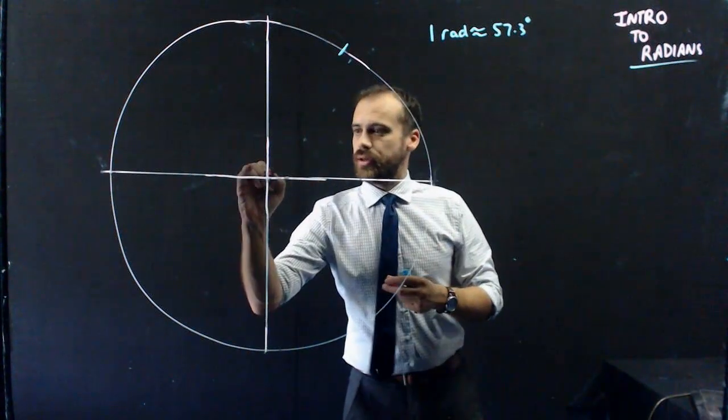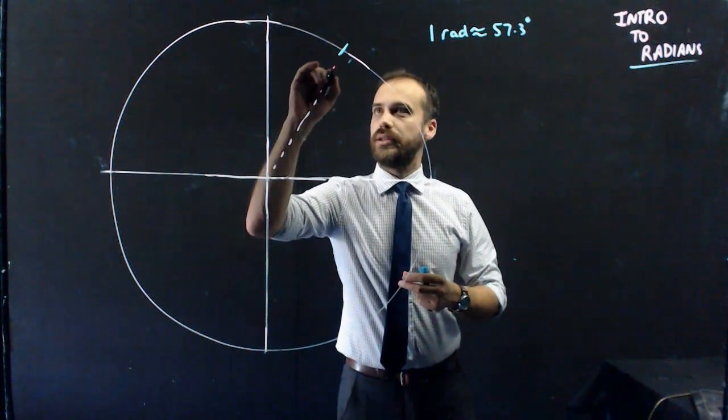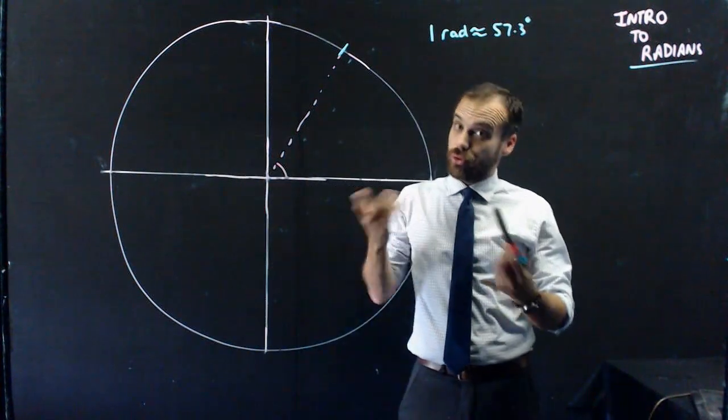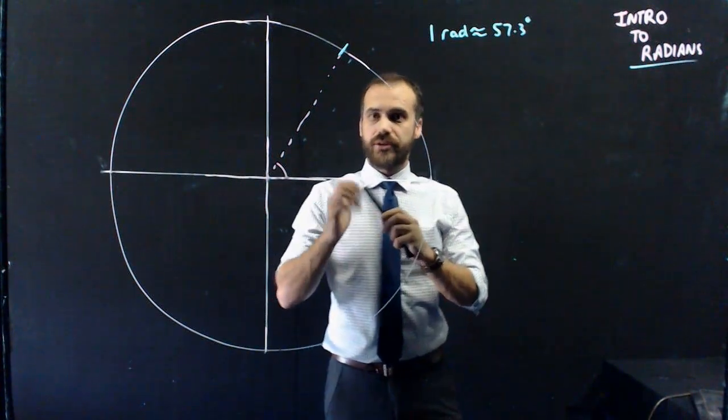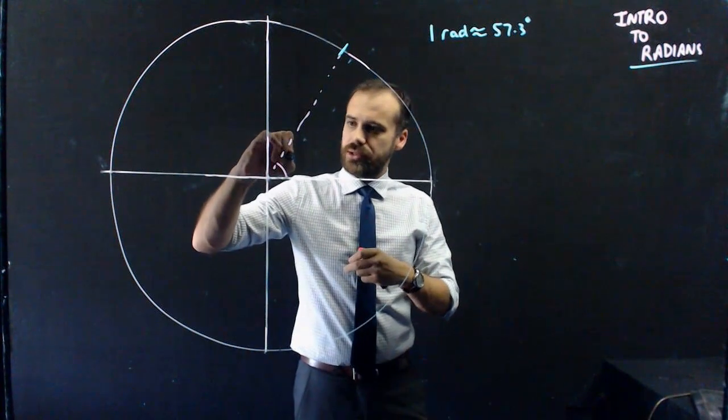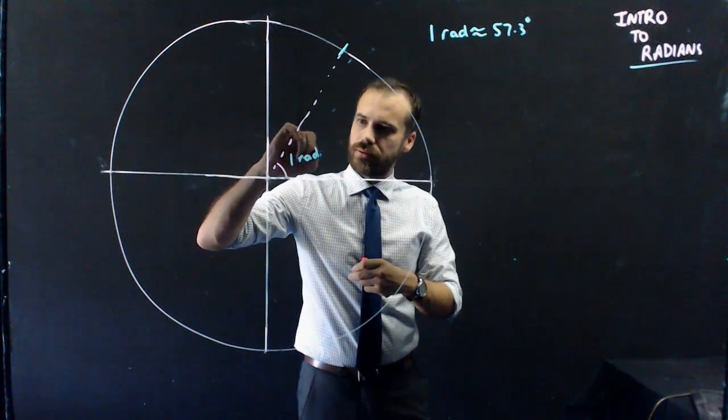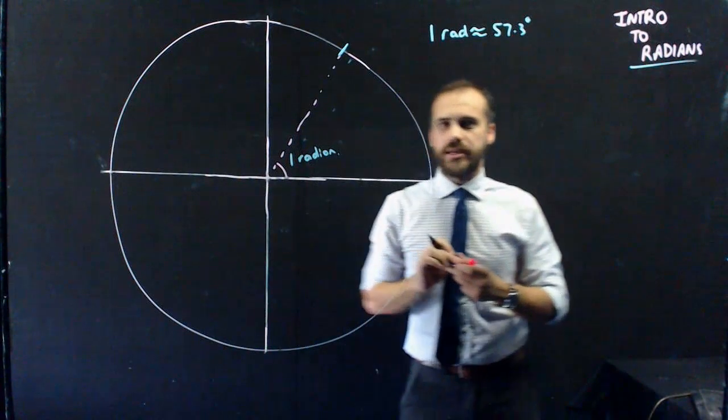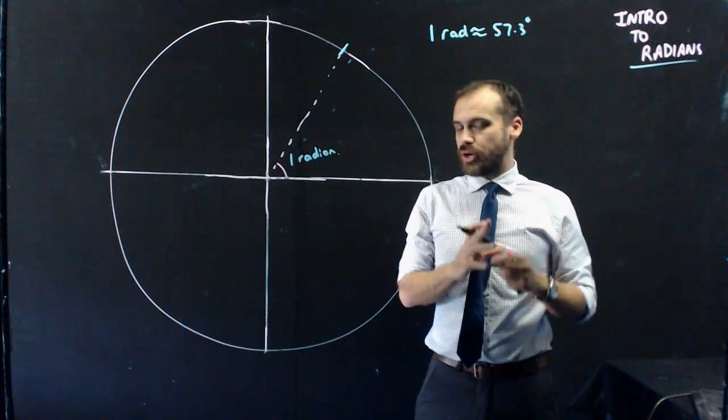Okay. So, there, draw a little dotted line up here like that. That is approximately 57.3 degrees. But more importantly, it is one radian. So, that is your new measure of angles.